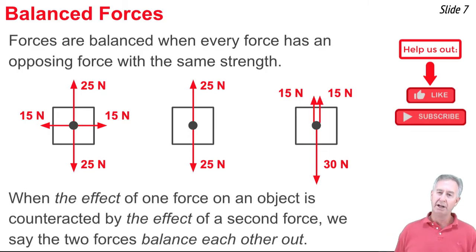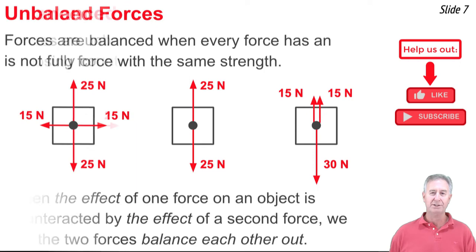So when we speak of objects having balanced forces, what we mean is the effect of a single force is always counteracted by the effect of one or more other forces acting upon the object in such a manner that all of the forces are said to cancel out or balance out.